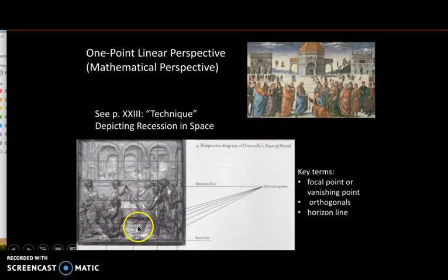Brunelleschi is making the most of that phenomenon of human sight, and he's systemizing it. You have a focal point, orthogonals, and from your distance point, you can map out lines. You have a system for making this grid, this tiled floor, and you use the tiled floor and the squares to measure the proportions of all objects so they shrink systematically in proportion as they go back, just as all the parts of the church were interrelated.